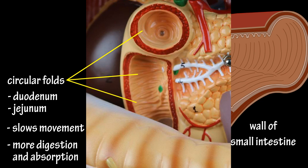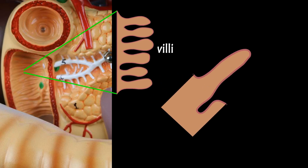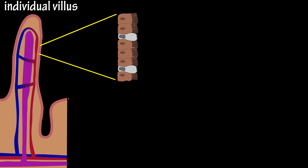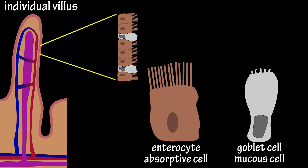The structure of these folds is absolutely amazing, as they have finger-like projections called villi. Each individual villus contains a rich capillary network, as well as a lacteal, which is a lymphatic capillary. The blood capillaries absorb most of the nutrients, and the lacteal absorbs lipids or fats and lipid-soluble vitamins. There are mainly two types of cells that line the surface of a villus: absorptive cells called enterocytes, and mucus-producing goblet cells.